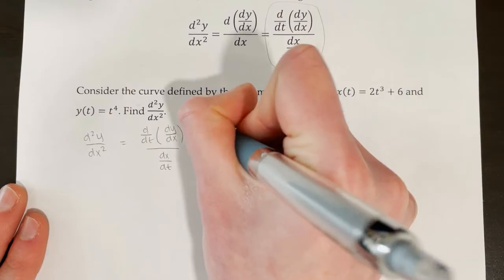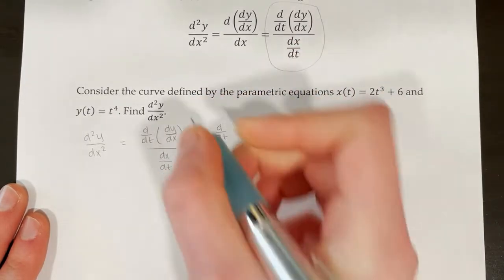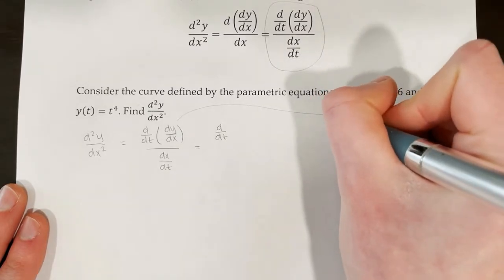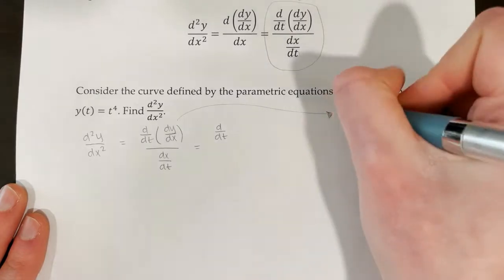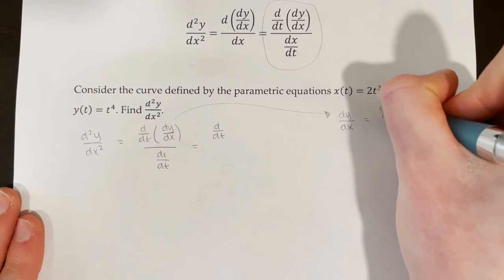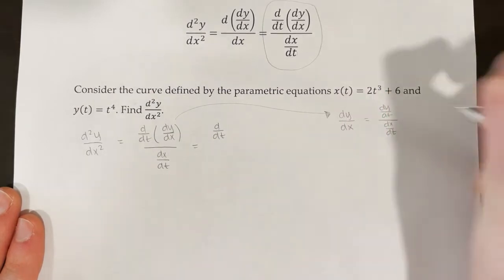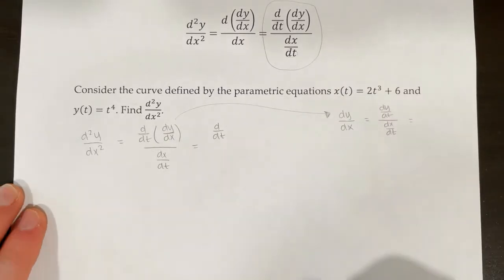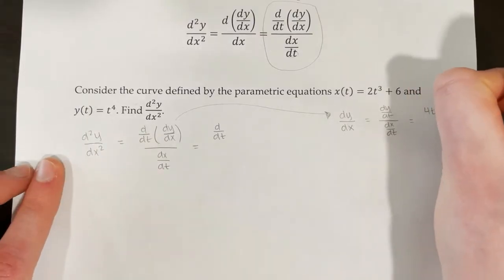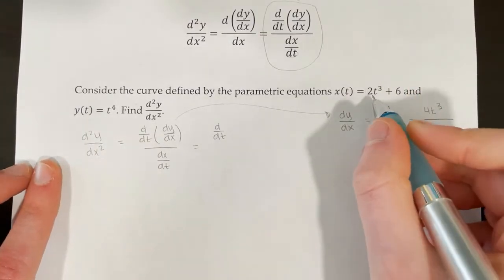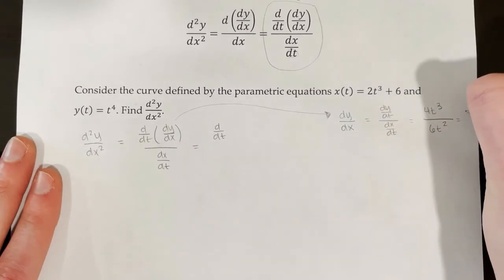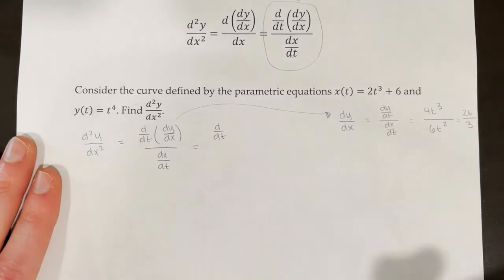If we're trying to find d dt of dy dx, the first thing we have to do is find dy dx. To find dy dx, we set that equal to dy dt over dx dt. For dy dt, we take the derivative of t to the power of 4, which is 4t cubed. For dx dt, we take the derivative of 2t cubed plus 6, which is 6t squared. This simplifies down to 2t over 3.